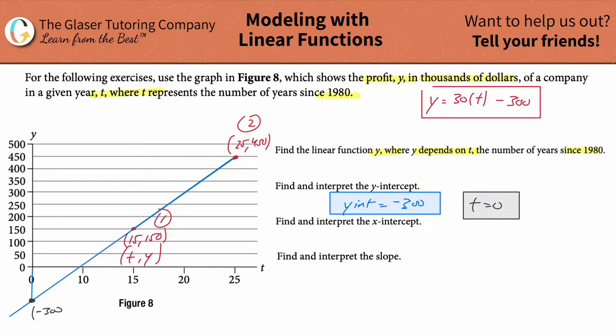But remember, this is in thousands of dollars, so it's really negative 300,000. That's what that means.